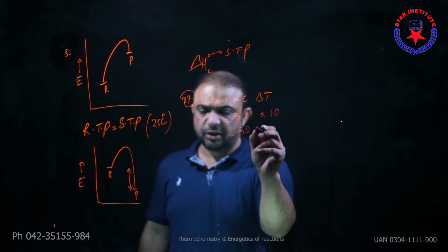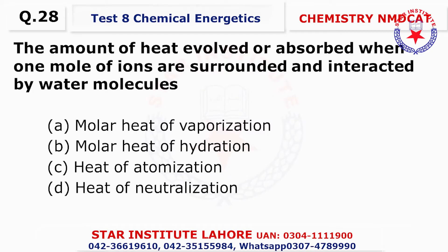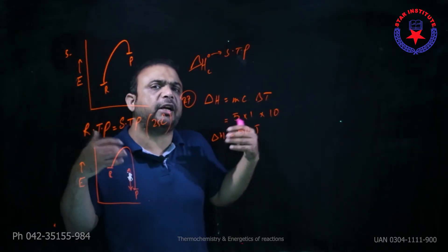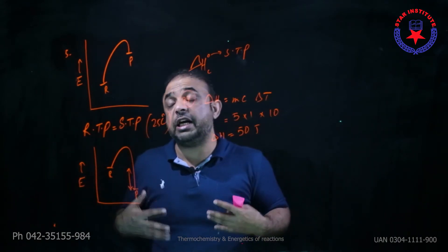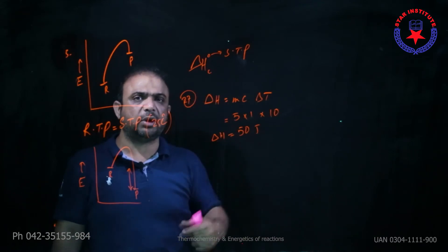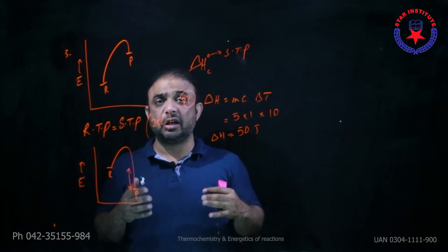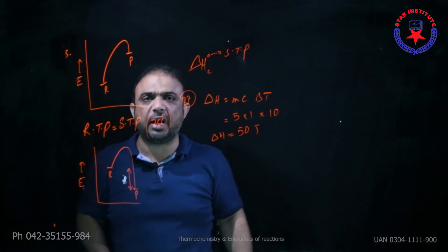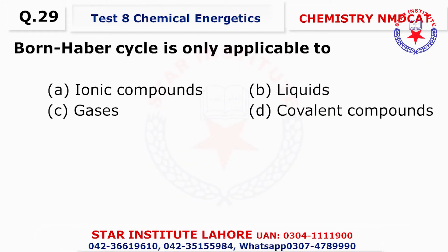Question number twenty-eight: The amount of heat evolved or absorbed when one mole of ions is surrounded and interacted by water — since water is doing the surrounding and interacting, this is called the molar heat of hydration. Note: hydration is specific to water. If a solvent (instead of water) is surrounding the ions, it would be called the heat of solvation.